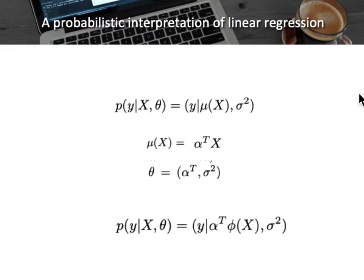Because the model remains linear with respect to the weight vector alpha, this approach is still called linear regression. The idea of replacing x with some transformed phi(x) is called basis function expansion, and it is typically used to generalize a linear model to a nonlinear setup. In the context of support vector machines, this is known as the kernel trick.